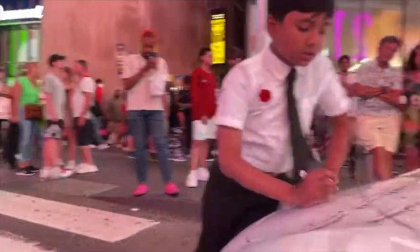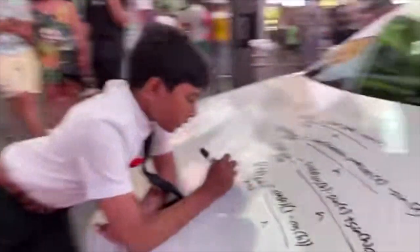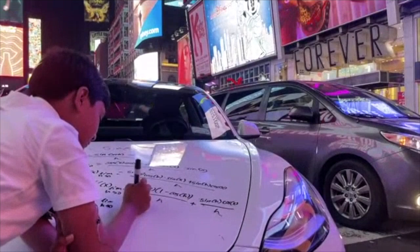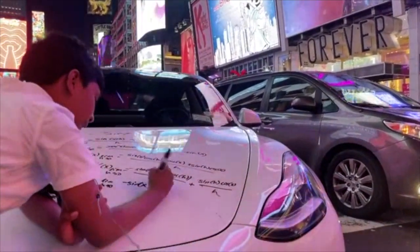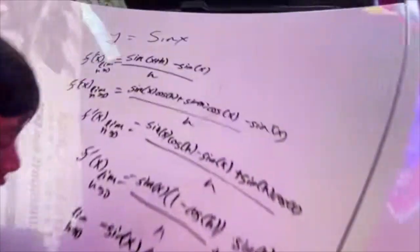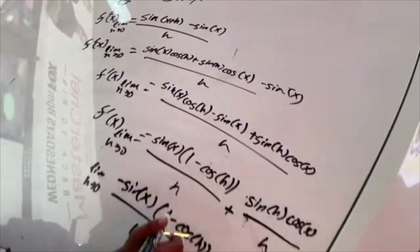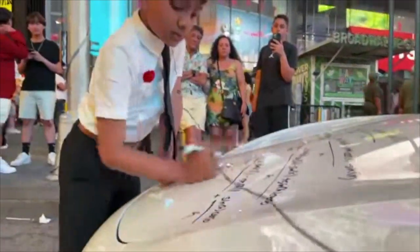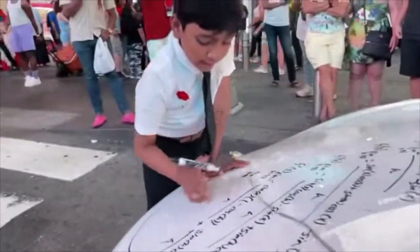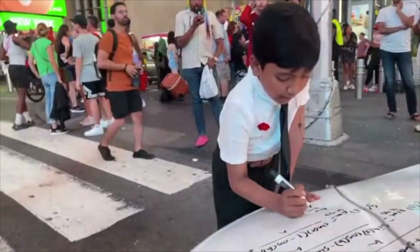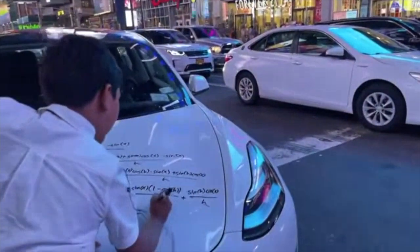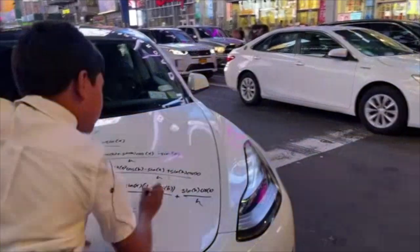So, plus. Now we're going to take the limit of these two parts. Taking the limit of the first part: this gives you zero — so this entire part is set to zero. And then you have sine of h and cosine of x over h.